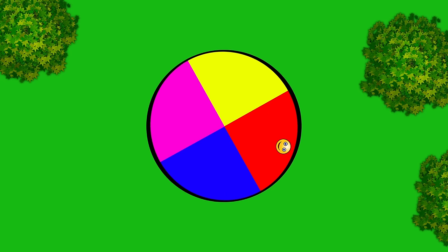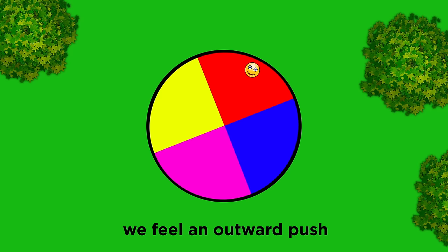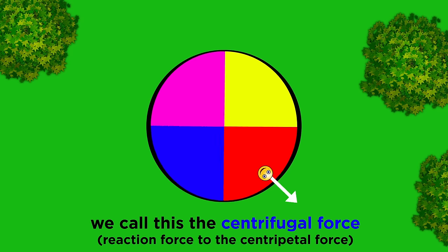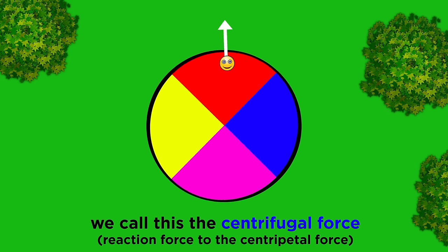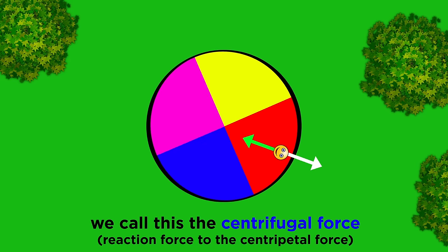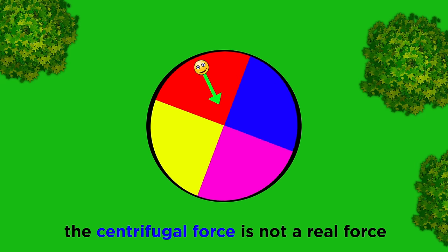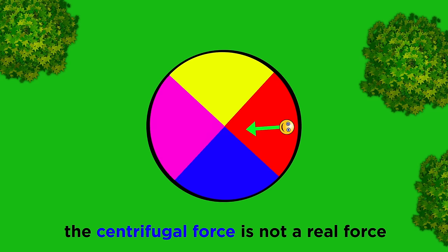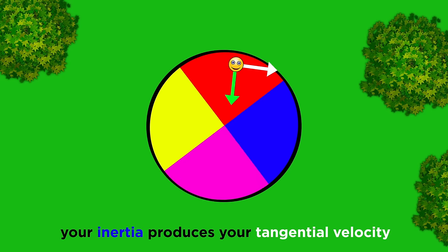But when you are on a rotating object like a merry-go-round, you feel yourself getting pushed outwards. This is often referred to as the centrifugal force, implying that it is the reactionary force to the centripetal force. But in actuality this is not a real force. The sensation that is produced on the merry-go-round is simply due to the inertia of your body attempting to maintain a straight-line path of motion.